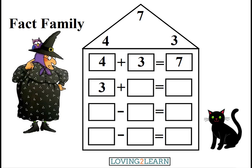Midnight tells me to grab the 3. We'll put 3 plus 4 equals what? 7! Count on by 4: 3, 4, 5, 6, 7. Or we just know that 3 plus 4 equals 7.